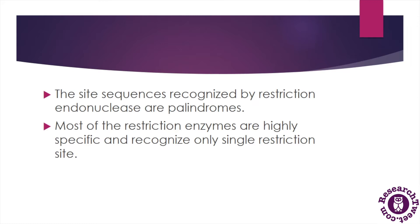As we discussed earlier, restriction endonucleases are very specific, which means they can only cleave at a particular site of the DNA molecule for which they are coded. For example, a type of endonuclease cleaves at the site GAATC — these alphabetical characters indicate the nitrogenous bases of DNA — then it will only cleave the DNA where this sequence is present. The sequences recognized by endonucleases will be palindromic base pairs.